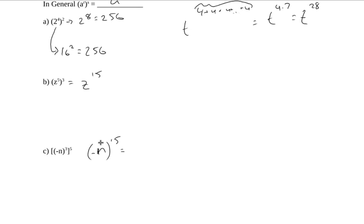But I can actually simplify this a little bit more. I can get rid of those parentheses by saying this negative would occur 15 times, and that's an odd number. So we would end up having one left over at the very end. This would be the same as the opposite of n to the 15th.